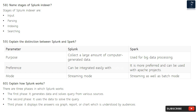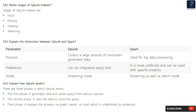Question 59: Explain the distinction between Splunk and Spark. Splunk is used to collect a large amount of computer-generated data, while Spark is used for big data processing. Splunk can be integrated easily with Hadoop; Spark is more preferred and can be used with Apache projects. Splunk operates in streaming mode, while Spark supports both streaming and batch mode.